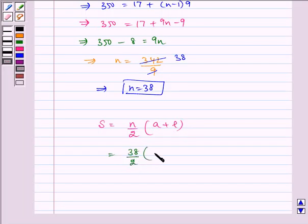38 by 2 multiplied by A which is 17 plus L which is 350, which is equal to, this gets cancelled by 19.